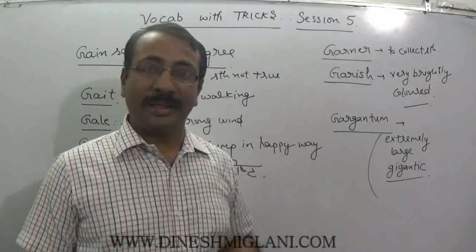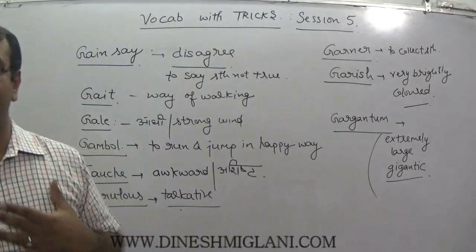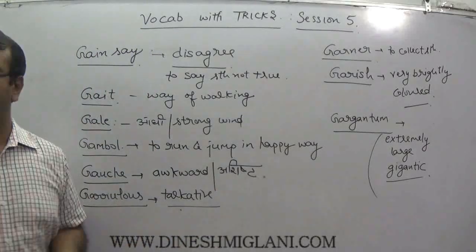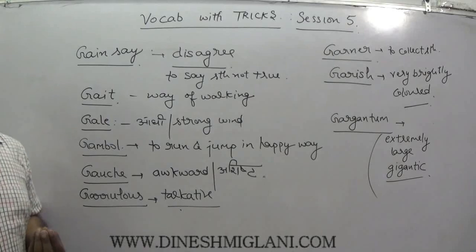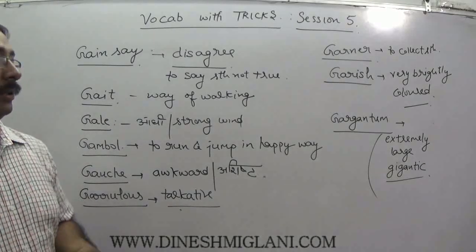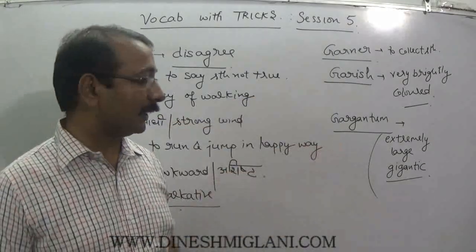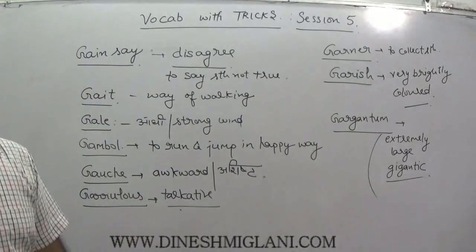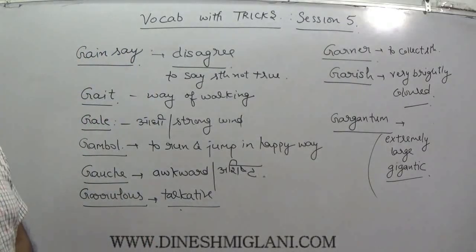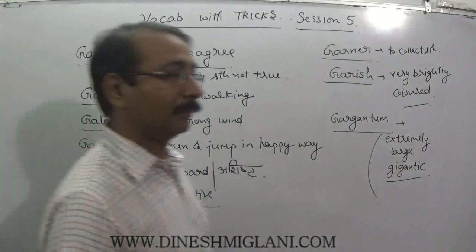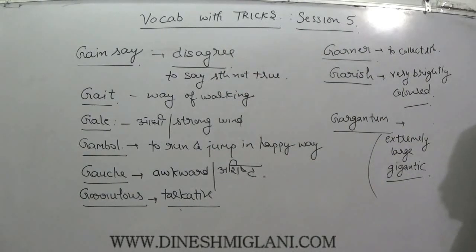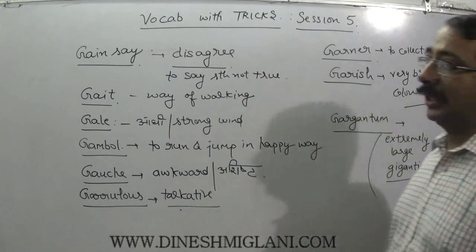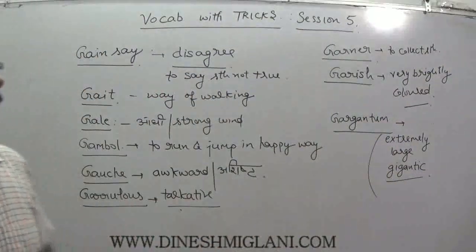Garish, G-A-R-I-S-H — Krish; Krish's clothes are very bright and showy. It means very brightly colored. Next, gargantuan — associated with 'ghar mein ghanta,' a very big bell; meaning extremely big. Something which is extremely large or gigantic is gargantuan.